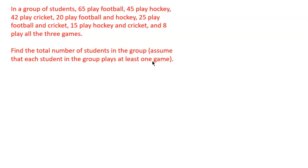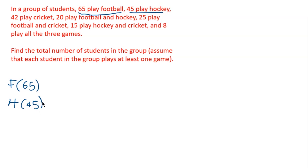Good day friends, welcome back to Smartbookite. In today's video we are going to be looking at a problem around Venn diagrams. In a group of students, 65 play football — let F denote football, so 65 play football. 45 play hockey, denoted by H. And 42 play cricket, denoted by C.